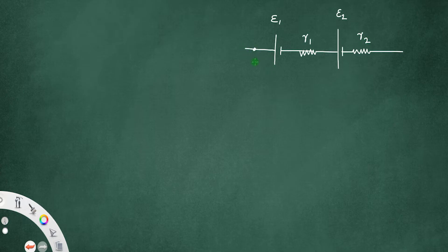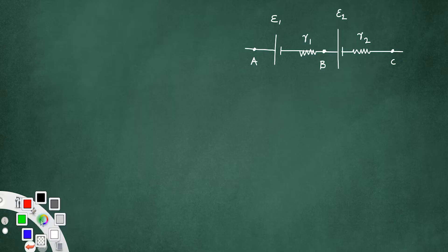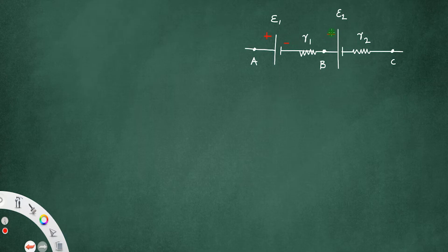Let this point be A, this point be B, and this point be C. Series connection means the positive terminal of the first cell is connected such that the negative terminal of the first cell is connected to the positive terminal of the second cell. For series connection, the same current flows through all the cells — let I be the current flowing through the circuit.